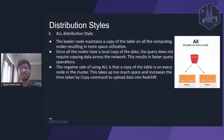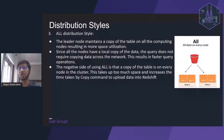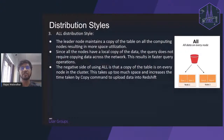The next distribution style is ALL distribution. As the name suggests, the entire table is replicated across all nodes of the Redshift cluster. This is a very high storage requirement because the same table is copied to each and every node. Therefore, ALL distribution style is preferred for tables that are smaller in size. If you use it for larger tables, it will use a lot of storage disk on the Redshift cluster.